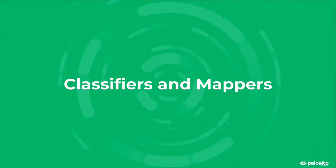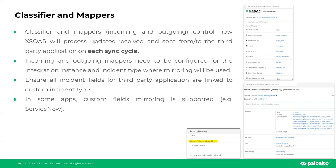Now, I'll hand it over to Abel to discuss classifiers and mappers. In this section we'll dive deeper into classification and mapping for mirroring. As with any other integration that can fetch incidents, one of the first steps is addressing classification and mapping. The classifier controls what incident type will be associated with fetched events, and the mapper controls what fields are mapped from the raw incoming event into our incident field structures.